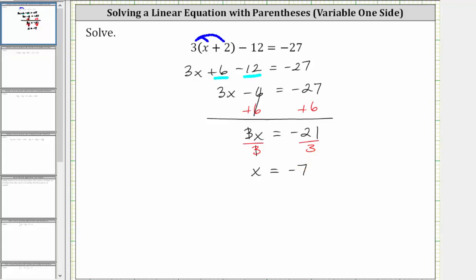The solution to the equation is x equals negative seven, which means if we substitute negative seven for x back into the original equation, it will satisfy the equation or make the equation true. Let's go ahead and check this.